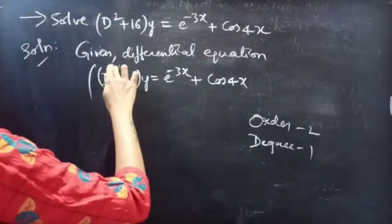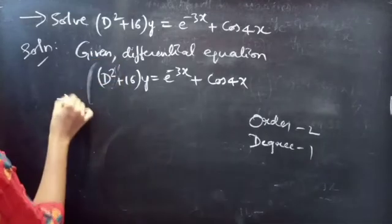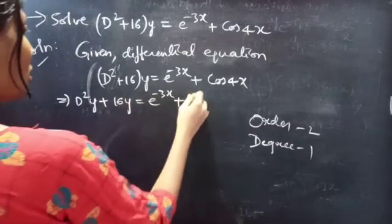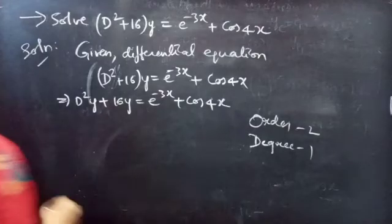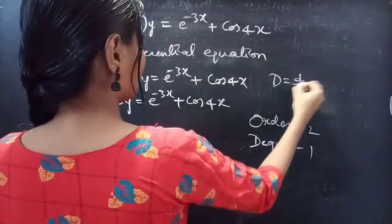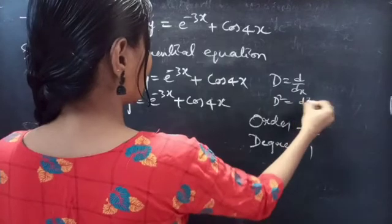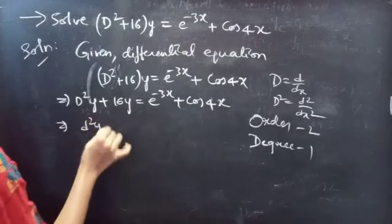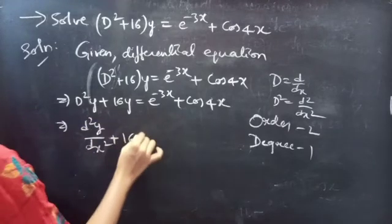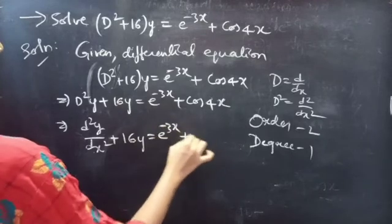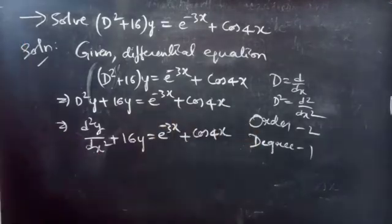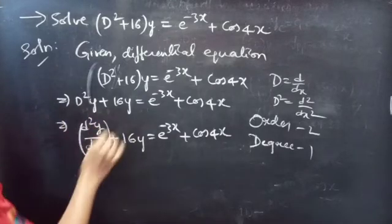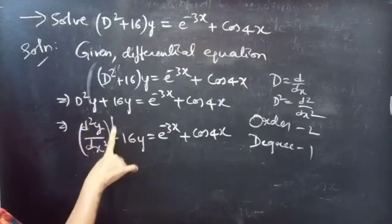We can write the given differential equation as D²y + 16y = e^(−3x) + cos(4x). We know that D is a differential operator, and D² can be written as d²y/dx². So we write d²y/dx² + 16y = e^(−3x) + cos(4x). The highest derivative is d²y/dx², so order is 2 and degree is 1.